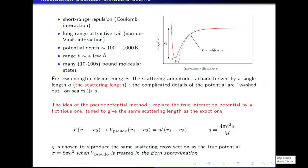If you are interested in things that happen on scales much bigger than A, where the details of the potential are washed out, then all you need to know is the value of the scattering length, and then you can predict what happens for many atoms interacting together. This leads to the pseudo-potential method: to describe a gas of many particles interacting with one particular potential, instead of using the true form, you use a fictitious one tuned so that it gives the same scattering length as the real one. The scattering length is extracted from experiments.